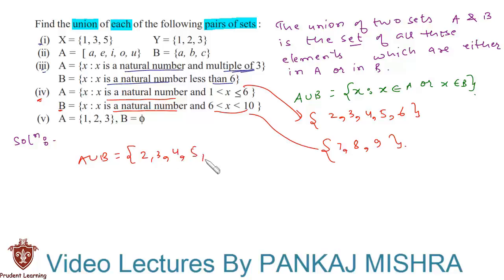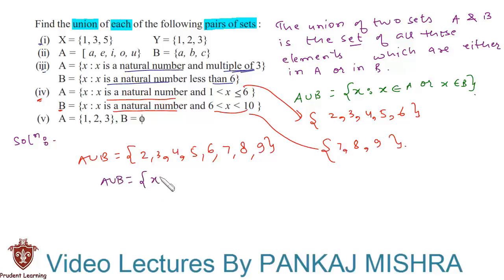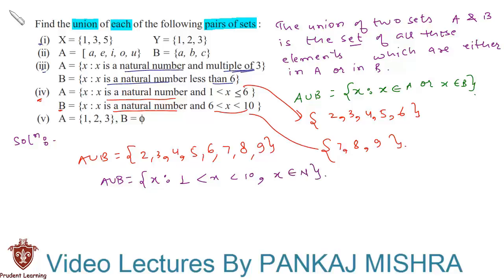This can also be written in set-builder form as the set of X such that X lies between 1 and 10 and X belongs to the natural numbers.